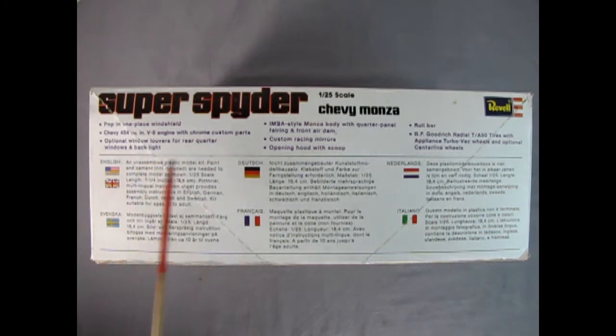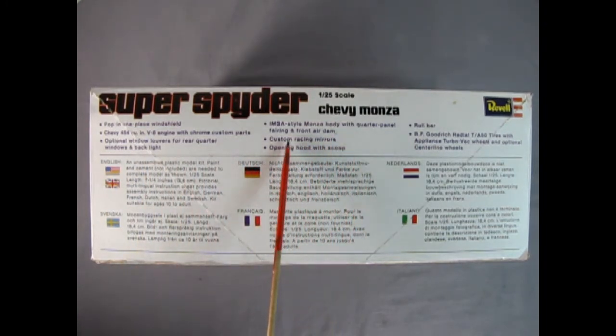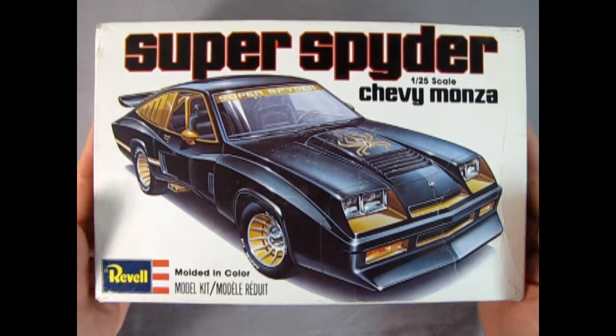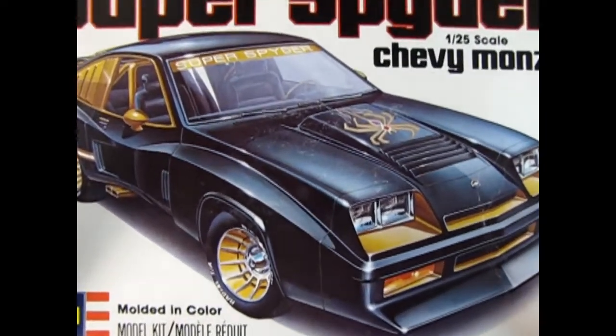Optional window louvers for rear quarter windows and backlight, IMSA style Monza body with quarter panel fairing and front air dam, custom racing mirrors, opening hood with scoop, a roll bar and BF Goodrich radial TA A50 tires with Appliance Turbo Vec wheels and optional Centerline wheels.